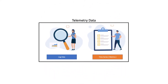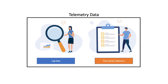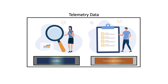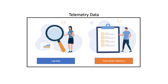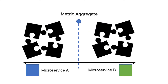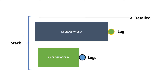We generally have two types of telemetry data: log data and time series statistics. The time series data is also known as metrics. In the context of a microservice environment, the metrics will allow you to get an aggregate understanding of what's happening. Then we have the logs that provide extremely fine-grained detail, but only on a given service.